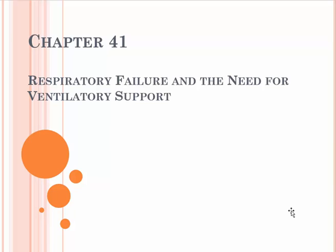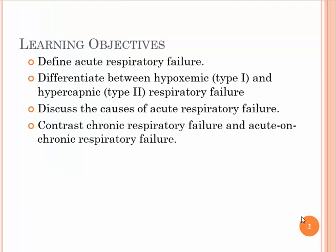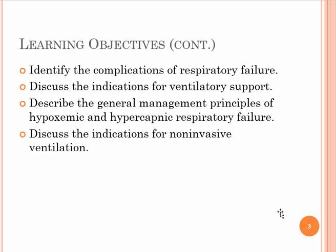Respiratory failure and the need for ventilatory support. The objectives of this chapter are: define acute respiratory failure, differentiate between type 1 and type 2 failure — that would be hypoxemic and hypercapnic failure — discuss the causes of acute respiratory failure, contrast chronic respiratory failure and acute-on-chronic respiratory failure, identify the complications of respiratory failure, discuss the indications for ventilatory support, describe the general management principles of hypoxemic and hypercapnic respiratory failure, and discuss the indications for non-invasive ventilation.